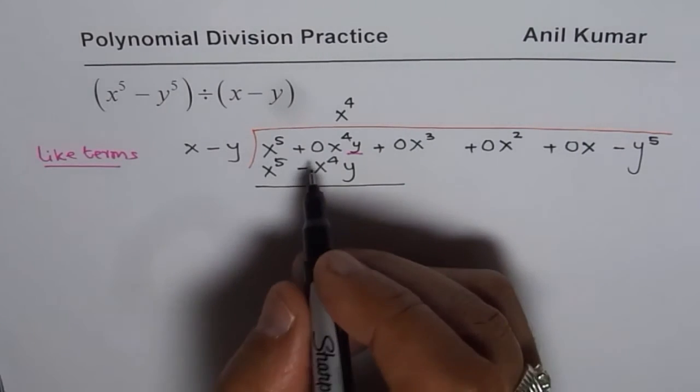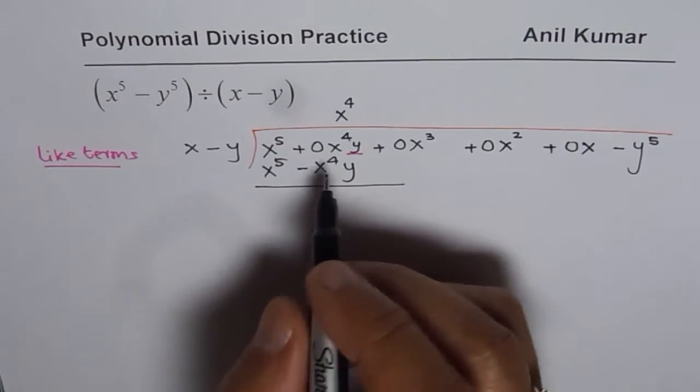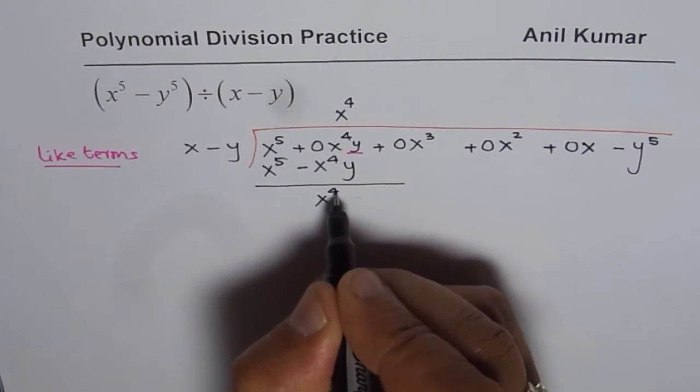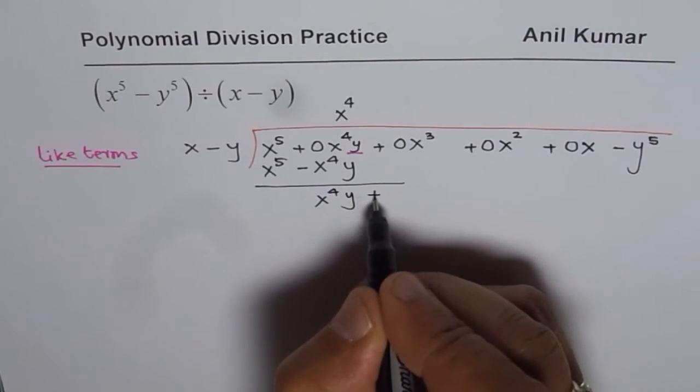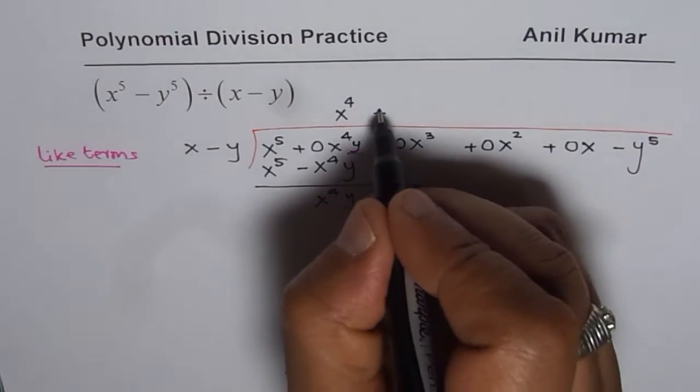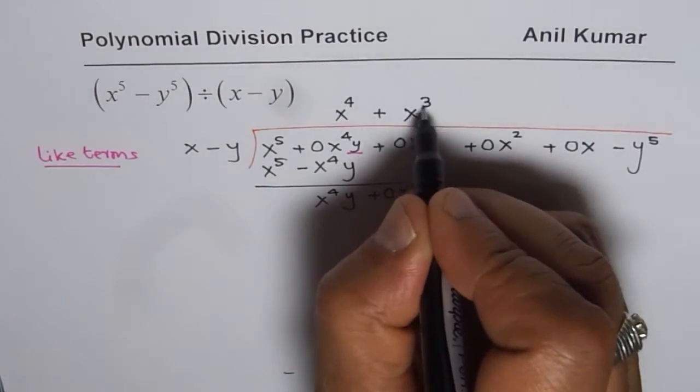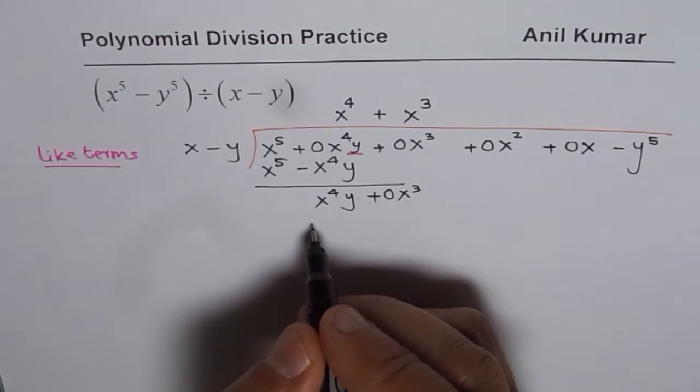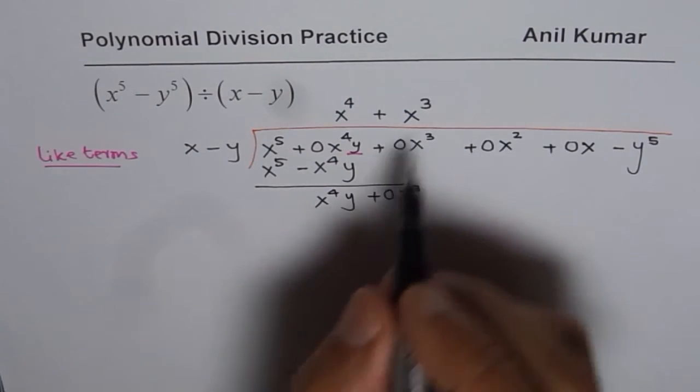We have to move forward, otherwise we get stuck. Even the zero placeholder doesn't work in such places - that's the trick. When you take away you get x to the power of 4y, and you bring down 0x cube.